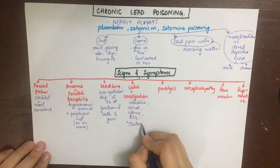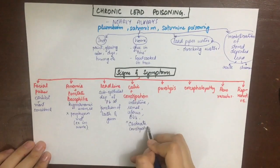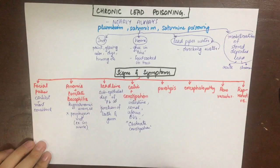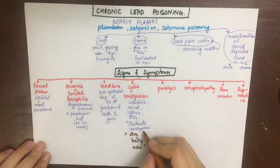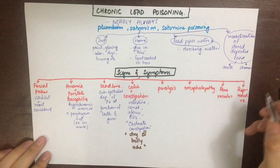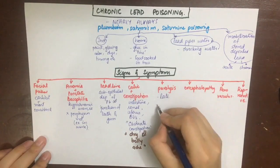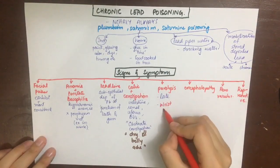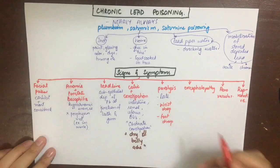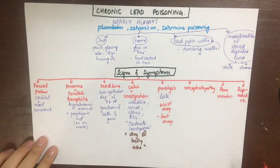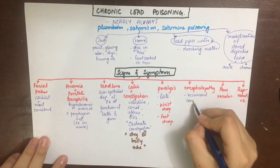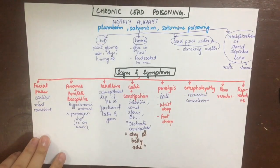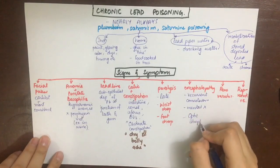There is severe colic and constipation. The colic affects the intestines, adrenal, ureters, and also the uterus. Severe chronic constipation, known as obstinate constipation or dry belly ache, is also a sign. Paralysis is a late manifestation, and in some people it can manifest as wrist drop and foot drop due to nerve and muscle atrophy.